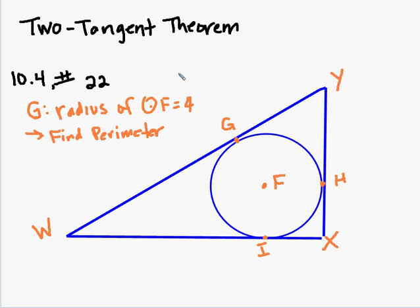We know from what we're given that the radius of circle F is 4. And we know by the two-tangent theorem that GY and YH are congruent. So the tangents that originate from a single point outside the circle are going to be congruent.